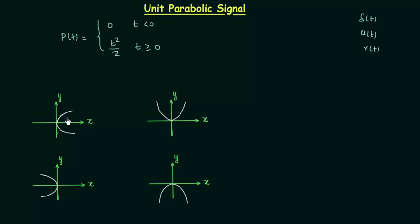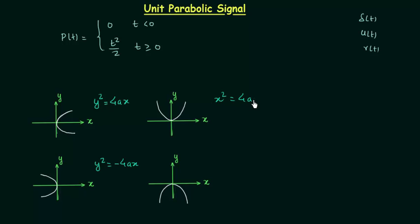The equation of the first parabola is y² = 4ax. The equation of the second parabola is y² = −4ax. The equation of the third parabola is x² = 4ay, and the equation of the last parabola is x² = −4ay.